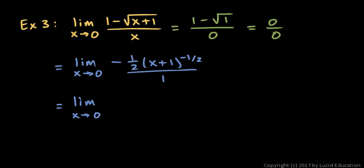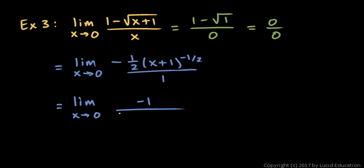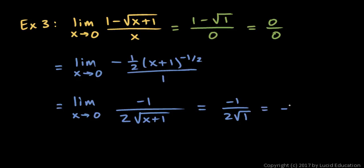Rewriting: the 1/2 goes to the denominator and the negative exponent moves that expression to the denominator as well, leaving negative 1 in the numerator over 2 times the square root of (x+1). Substituting x = 0 gives negative 1 over 2 times the square root of 1, which is negative 1 half. That's our answer.